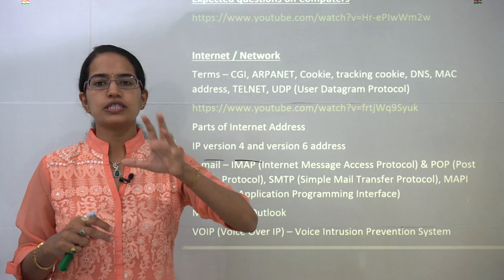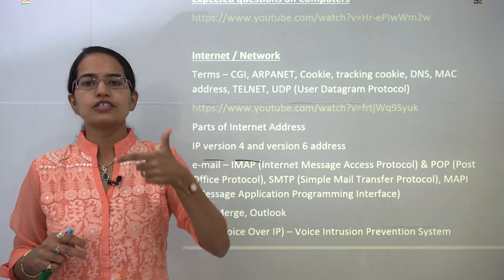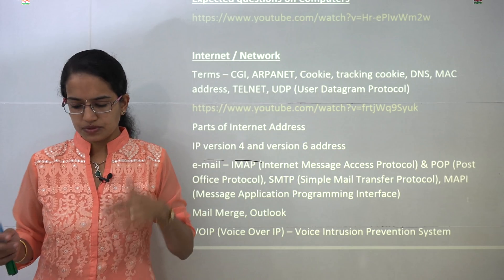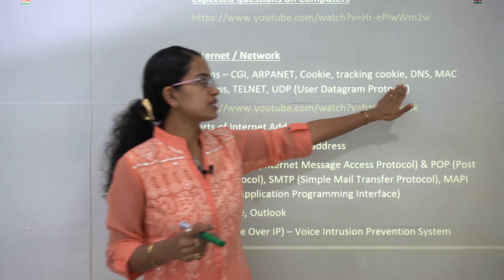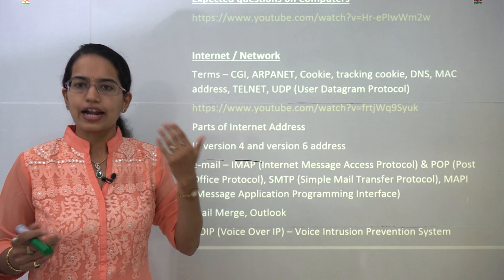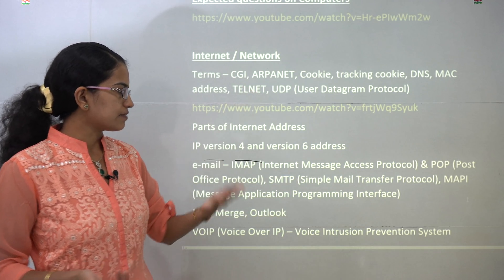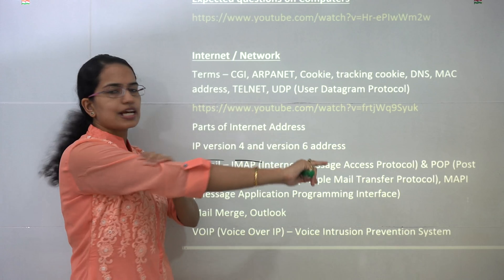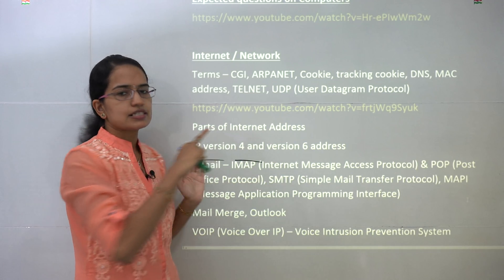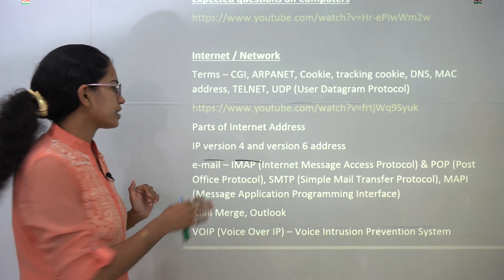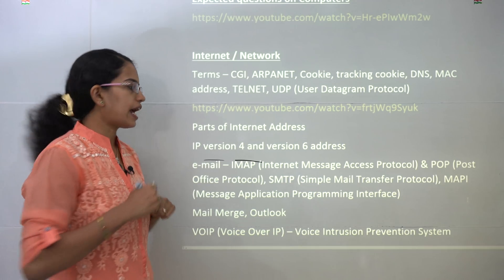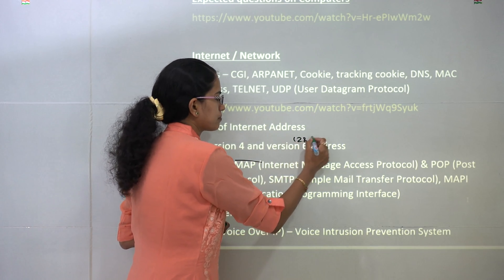The next is DNS — Domain Name System — which is again important. Then you have MAC address, which is the Media Access Control address and is the address of the hardware. Telnet is again very important and has been covered in the last class. Parts of the internet address such as the URL are important. IP version 4 is 32-bit and IP version 6 is 128-bit — both very, very important.